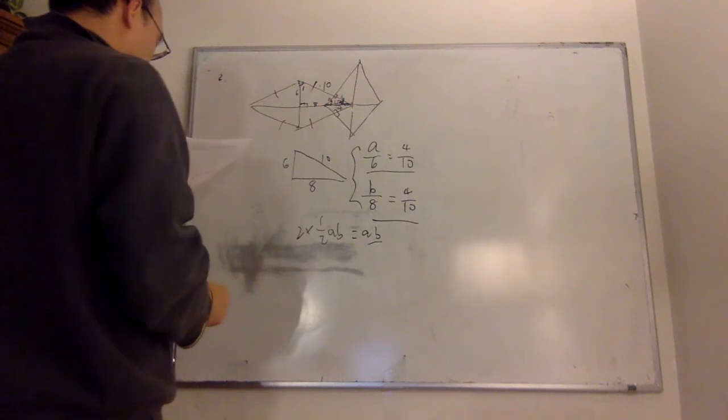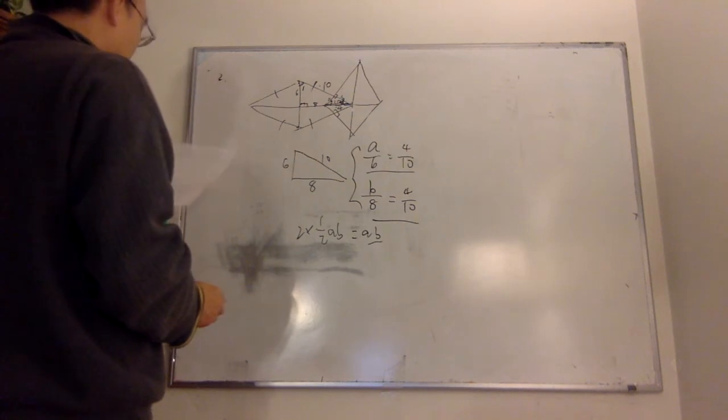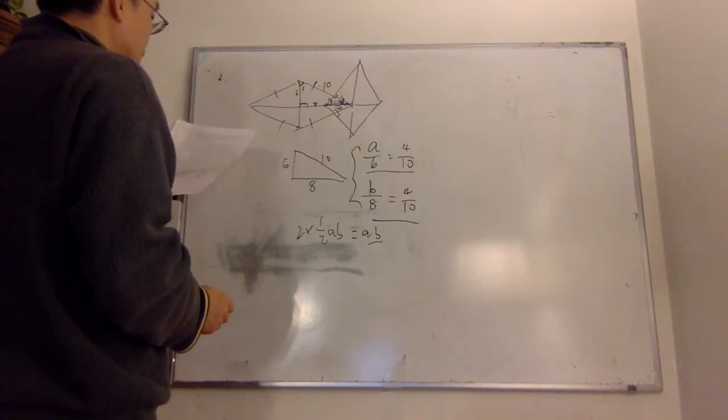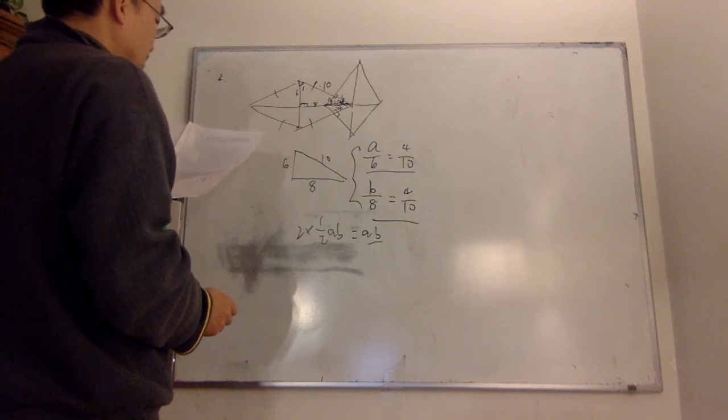So, the area of the overlap shaded region. And the next problem is about a box that contains 4 chocolates and 1 fruit chew. Clark and Chloe take turns drawing a treat out of the box without replacement. Whoever draws the fruit chew wins. Clark draws first. What is the probability that Chloe wins? Express the answer as a common fraction.